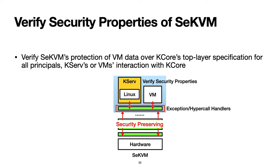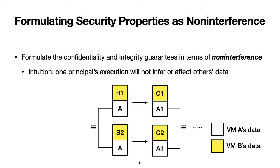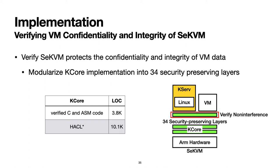We formulate SCKVM's VM security guarantees in terms of non-interference. The intuition is we want to show that one principal's execution will not infer or affect others' data, so that the confidentiality and integrity of VM data is protected. Specifically, we verify non-interference over the machine states that contain a given principal's data, like the portions for VM A and VM B shown in the diagram. Using microverification, we verified our SCKVM implementation protects the confidentiality and integrity of VM data.